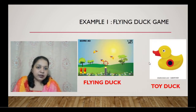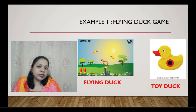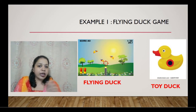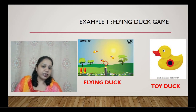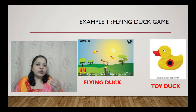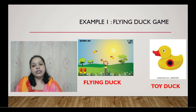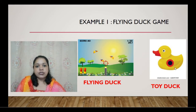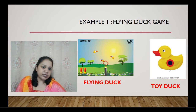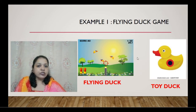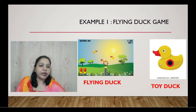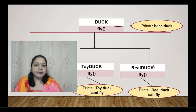Let's start with virtual functions using the example of a flying duck game. In this game, birds fly all around and you shoot them to get points. There is a possibility that you encounter a toy duck — a dummy that doesn't fly, cannot be shot, and gives no points. We need to implement this concept using polymorphism.